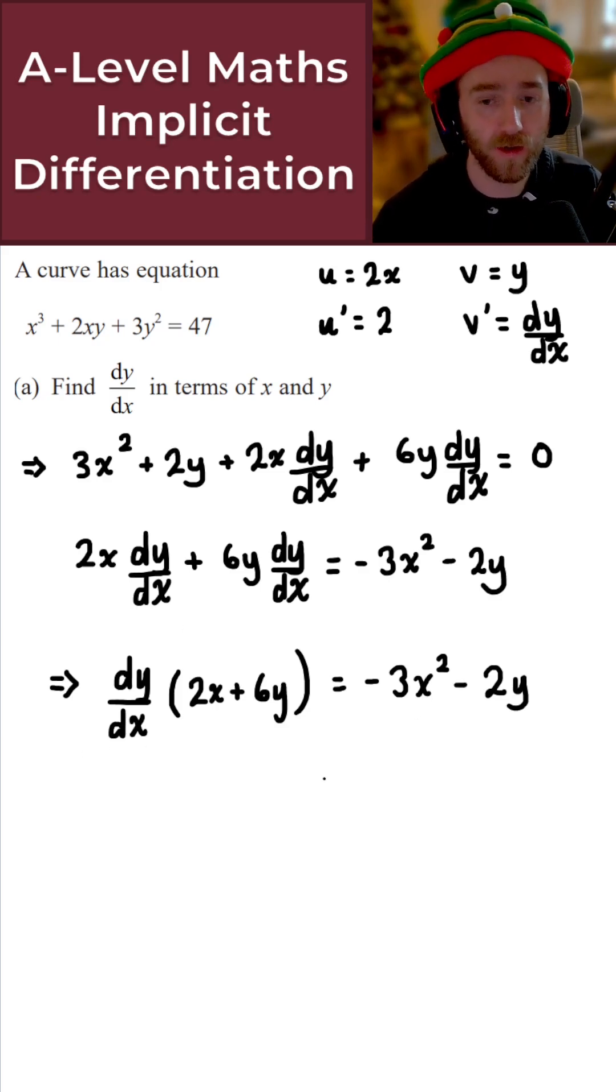And finally, we just want dy by dx in terms of x and y. To obtain that, what we need to do is divide both sides by 2x plus 6y. Let's quickly do that underneath.